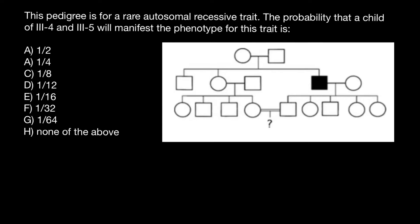Hello and welcome to Nikolai's genetics lessons. Today's problem is: this pedigree is for a rare autosomal recessive trait. The probability that a child of individuals III-4 and III-5 will manifest the phenotype for this trait is — choose the correct answer. I recommend you pause the video here, try to solve this problem on your own first, and when you're ready, run the video again and compare your answer with my explanation.